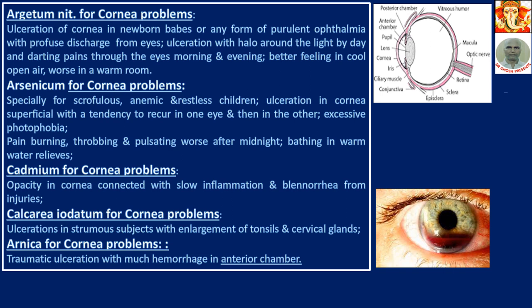Arnica for cornea problems: traumatic ulceration with much hemorrhage in the anterior chamber. The lens has divided the whole eye into two chambers — the anterior chamber, which is full of aqueous humor, and the posterior chamber, which is large and full of vitreous humor. Bleeding in the anterior chamber is the key indication for Arnica.